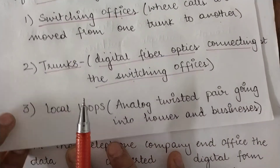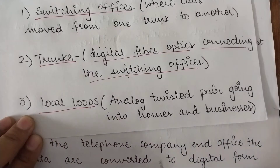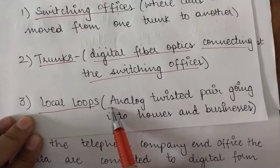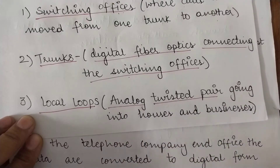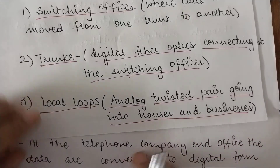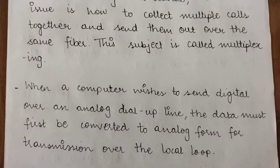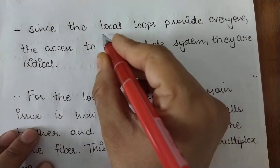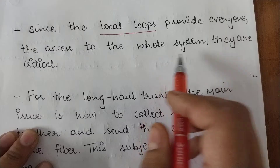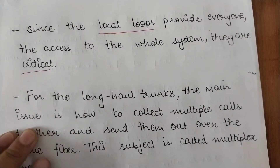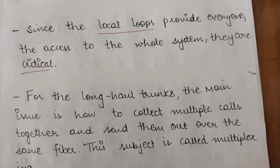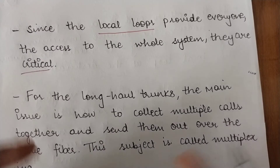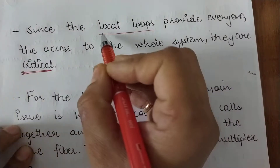The third major component of a telephone system is local loops. Local loops basically consist of analog twisted pair wires going into houses and businesses — the wires connecting your telephone system to the switching offices. Since local loops provide everyone access to the whole system, they are critical. As a layman, we just see the local loops connecting our wired telephone systems to the whole system that makes the call possible.